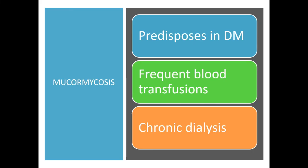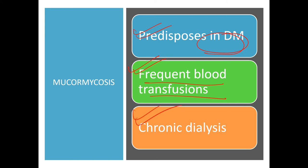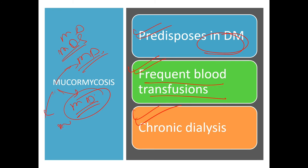Mucormycosis is predisposed in patients with diabetes mellitus, those receiving frequent blood transfusions, and chronic dialysis patients. A useful mnemonic: M for Mucormycosis, D for Diabetes Mellitus — MD. Also remember blood transfusion and chronic dialysis as predisposing conditions.